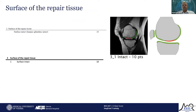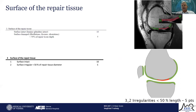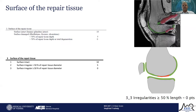The next variable is the surface of the repair tissue. An intact surface scores 10 points. An irregular surface affecting less than 50% of the repair tissue diameter scores 5 points. Note that in the original MOCAD, this was referenced to repair tissue depth, causing confusion and overlap with the filling variable. To avoid this, we now assess surface irregularity relative to repair tissue diameter. An irregular surface affecting more than 50% of diameter scores zero.